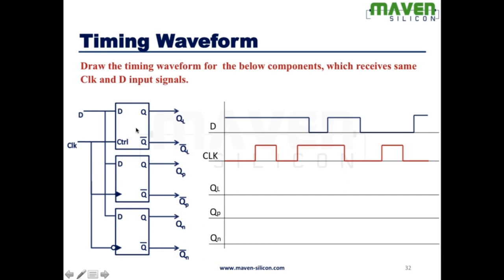Now let's look at the latch functionality. This is the clock waveform and this is the input. Now the clock becomes active high. So during this level, whatever happens to the input, it reflects the same at the output — that's why it's called a transparent device. Here, D is high, so the output is going to stay high like this.